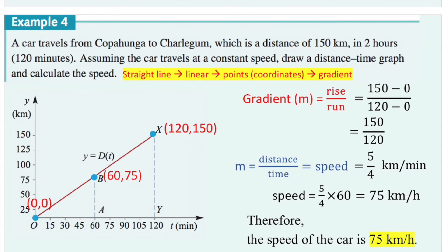Now let's look at the question. Assuming the car travels at a constant speed — constant speed implies we are dealing with a linear graph, and therefore the gradient is consistent. Why do linear graphs have constant speed? Because at any given point on this linear graph, the gradient is the same. The gradient equals rise over run, which equals distance over time, and we know distance over time equals speed. So the gradient of this linear graph is also the speed of the car.